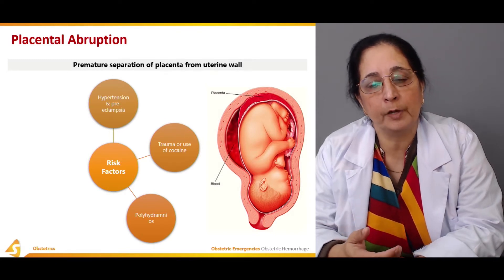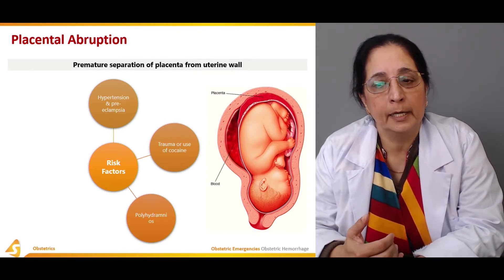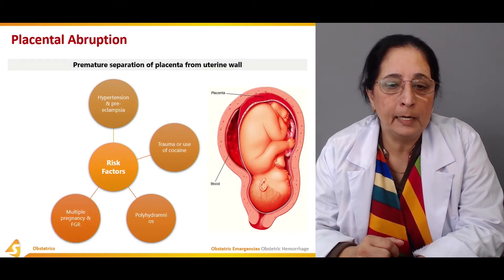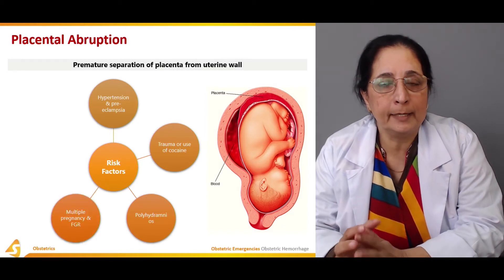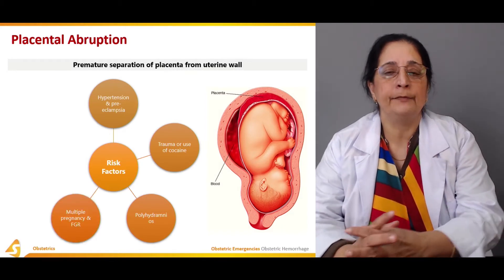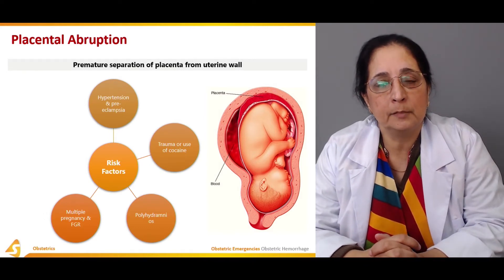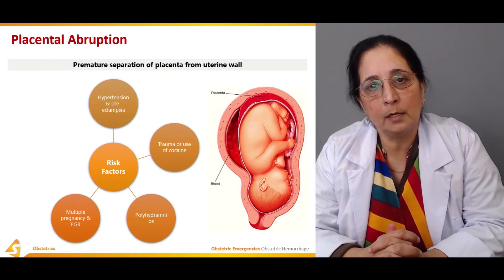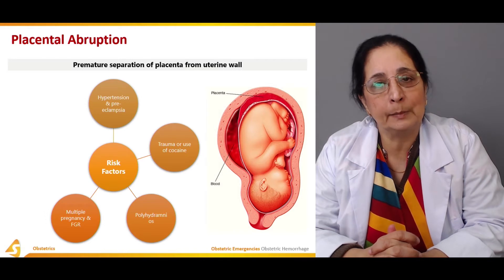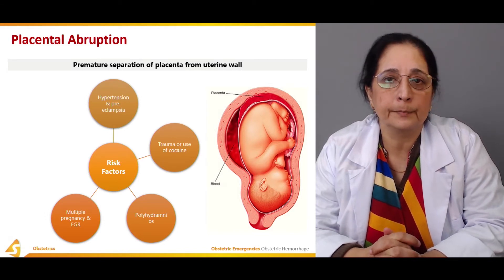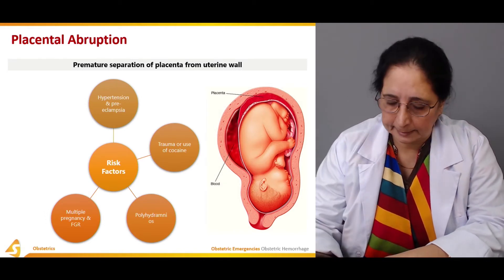Polyhydramnios, when there is an excessive amount of amniotic fluid present, can also lead to abruptio placentae. Multiple pregnancy and fetal growth restriction — if there is more than one fetus, multiple pregnancy can also cause abruptio placentae.